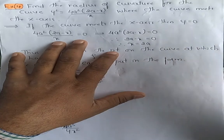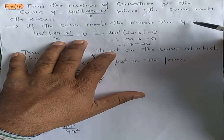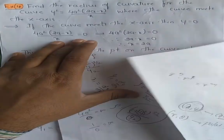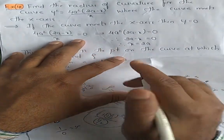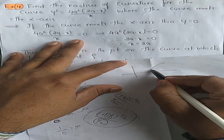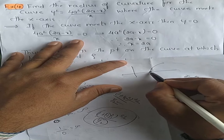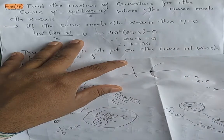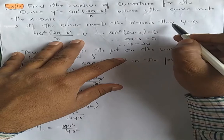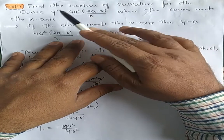They have not given the point explicitly. As we know, if the curve meets the x-axis then y becomes 0. If I take an xy-plane and the curve intersects the x-axis, then y becomes 0, so only the x-coordinate remains.